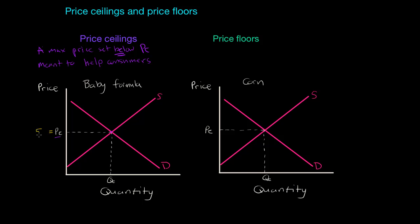Let's assume that the free market price of baby formula is currently $5. The government decides that too many families simply cannot afford this price, so the government decides to establish a maximum price — a price ceiling — of $3. It is now illegal for sellers to charge more than $3 per serving of baby formula. Let's examine the effect this price ceiling will have on the market for baby formula.